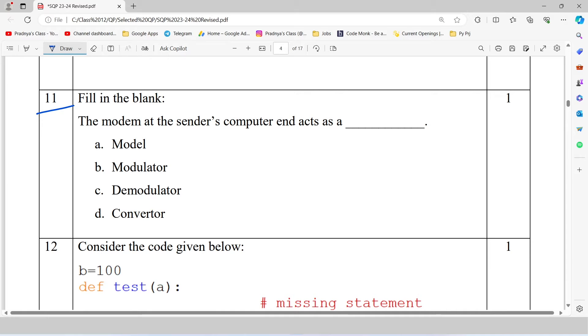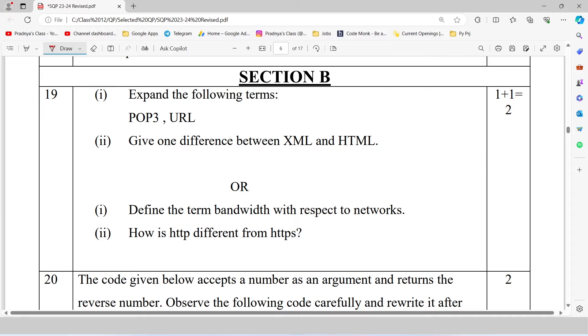Let's move ahead and check are there some questions based on networking. Here is one more question which is in the form of fill in the blank. The modem at the sender's end acts as a. From the given 4 options, the option B is the correct one. At the sender's end it acts as a modulator, where analog signals are converted to digital. In this way we solved 2 questions from section A. Now it's time to check out the question in section B.